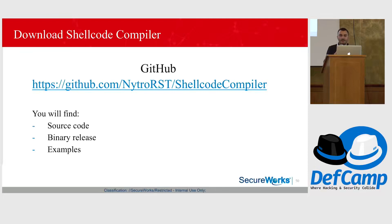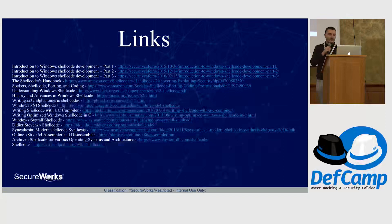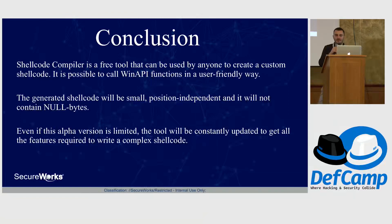You will find the project at the provided address, including examples and the binary release. It's private right now, but I will make it public immediately after this presentation. Here are some useful links — the first two are in-depth descriptions of how Windows shellcodes work, and you can find step-by-step guides on how to manually write one. You will notice that it's easier to use the shellcode compiler. As a conclusion: the shellcode compiler is a free tool that takes custom code where you declare and call functions, and outputs a position-independent, null-free shellcode. Please note it's the alpha version, so it may have problems — use GitHub to report any issues.